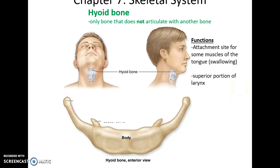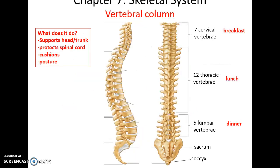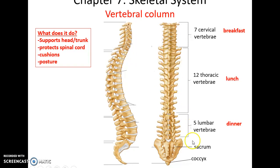The vertebral column helps to support the head and trunk, protects the spinal cord, provides some cushioning, and gives us part of our posture. There are seven cervical vertebrae, twelve thoracic vertebrae, five lumbar vertebrae, the sacrum, and the coccyx — all forming the vertebral column.